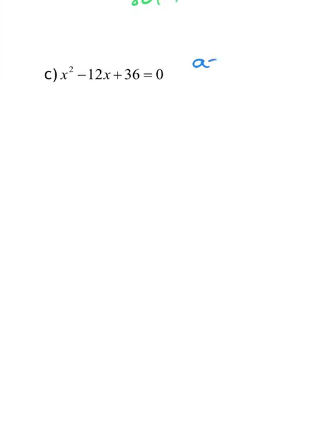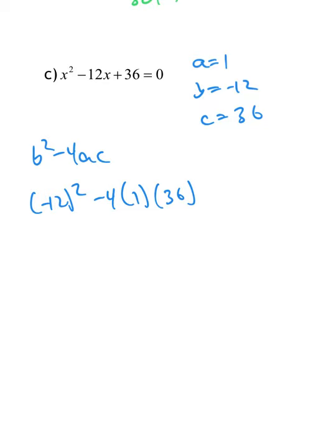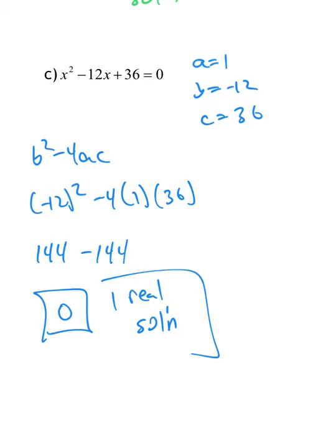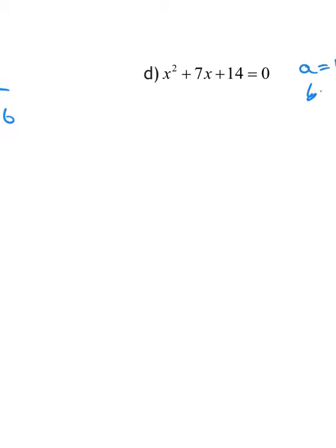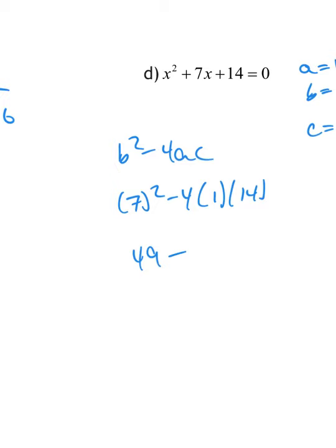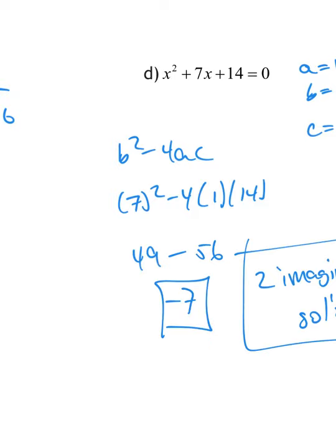Example C: a is 1, b is negative 12, c is 36. Discriminant: (−12)² − 4(1)(36) = 144 − 144 = 0. That tells me there is only one real solution. Example D: a is 1, b is 7, c is 14. Discriminant: 7² − 4(1)(14) = 49 − 56 = negative 7. So there are two imaginary solutions again.